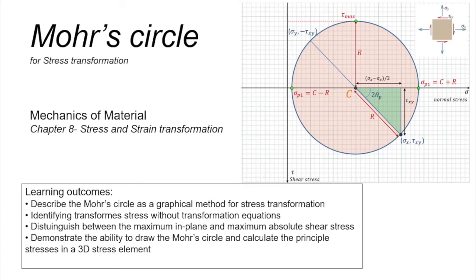The concept of stress transformation seems straightforward because we have equations to calculate stress on different planes. Today I want to look at this conceptually and see how we can use Mohr's circle to graphically interpret stress transformation, the concept of principal stress, and the maximum shear stress. We also want to use Mohr's circle to extend these equations and calculate the maximum absolute shear stress and the maximum in-plane shear stress.